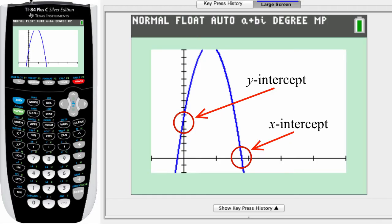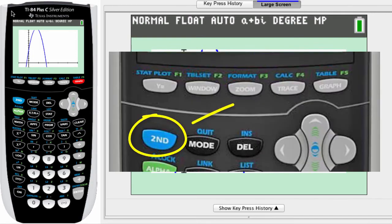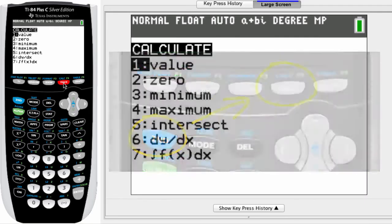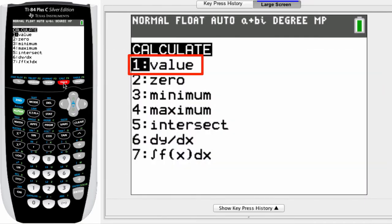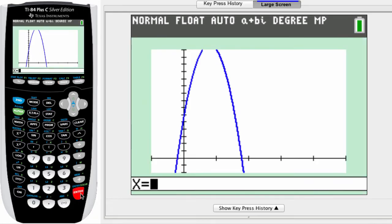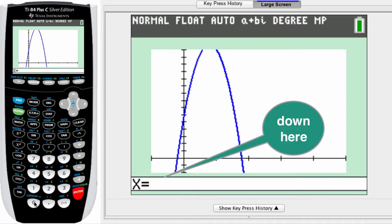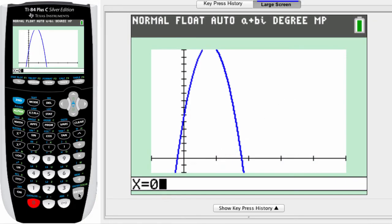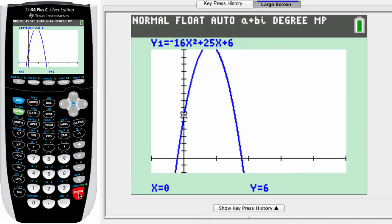Begin by pressing the second key and then the key marked with the word trace. To find the y-intercept, we're gonna use the first one, value. Press enter. Now for putting in a value for x, we're gonna put in 0. That would be exactly the y-axis and when we put in a 0 and hit enter, our y-intercept is revealed right here where it says y equals 6.